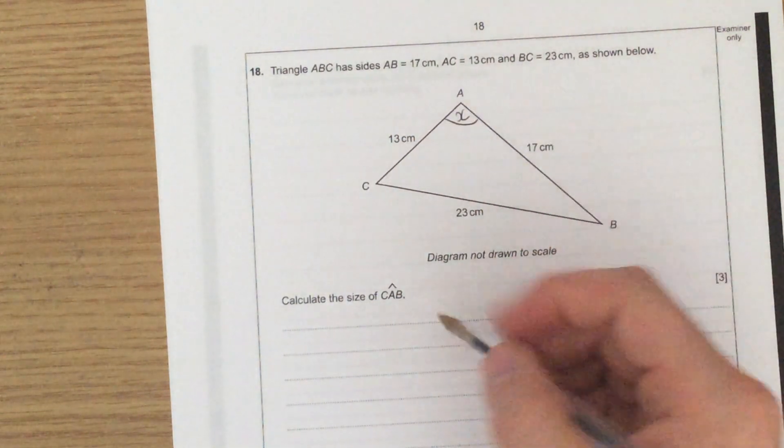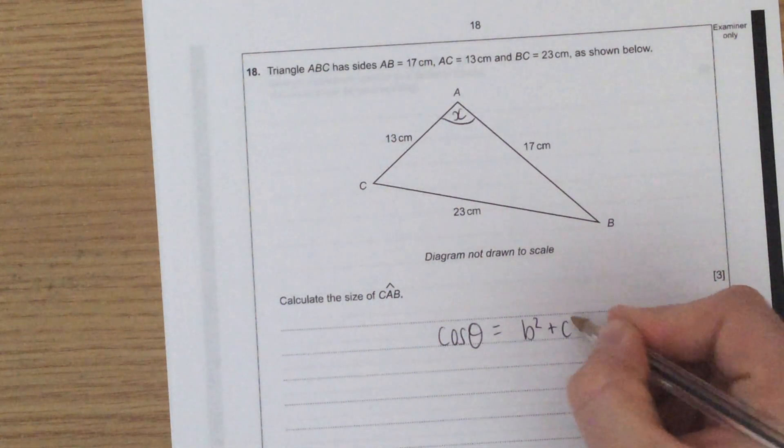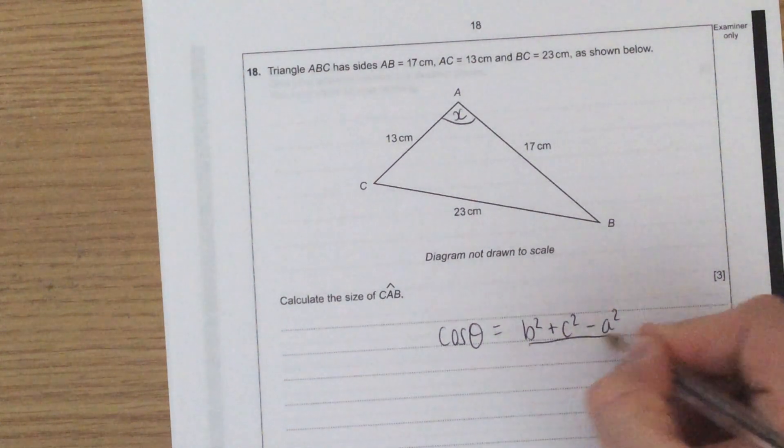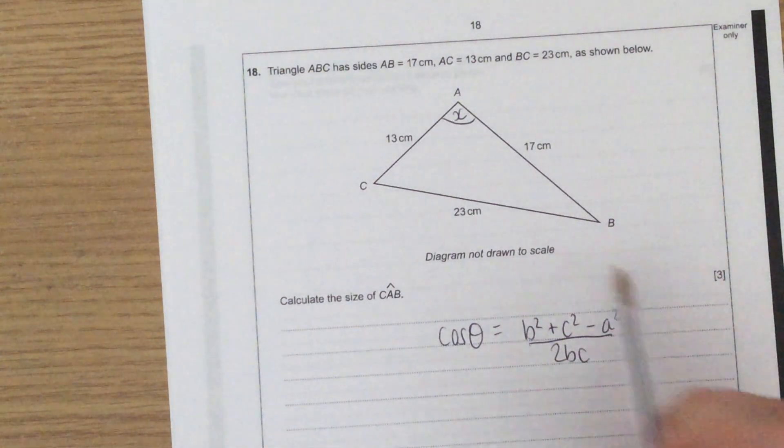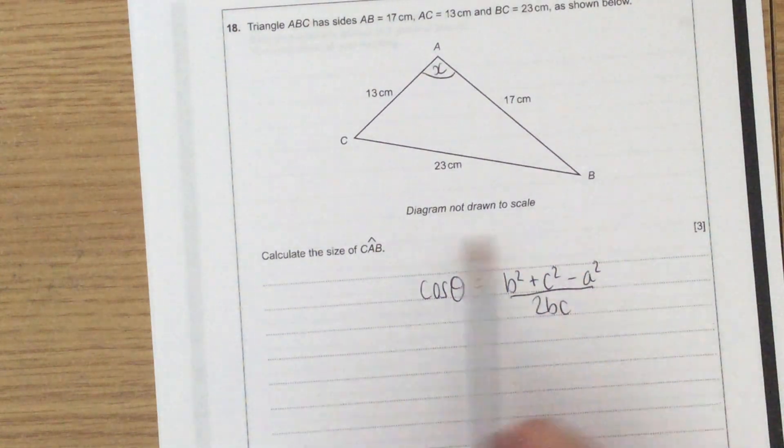So if I want cosine rule for an angle, I find that cos theta equals b squared plus c squared minus a squared, all divided by 2bc. Remember, this isn't given to you in the paper, but cosine rule for sides is, which you can rearrange to create this.